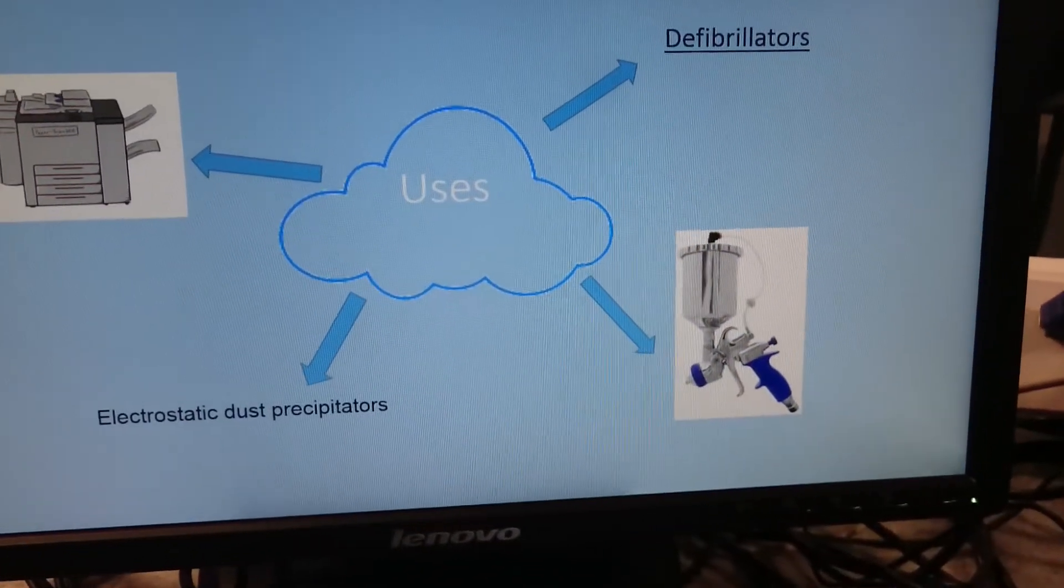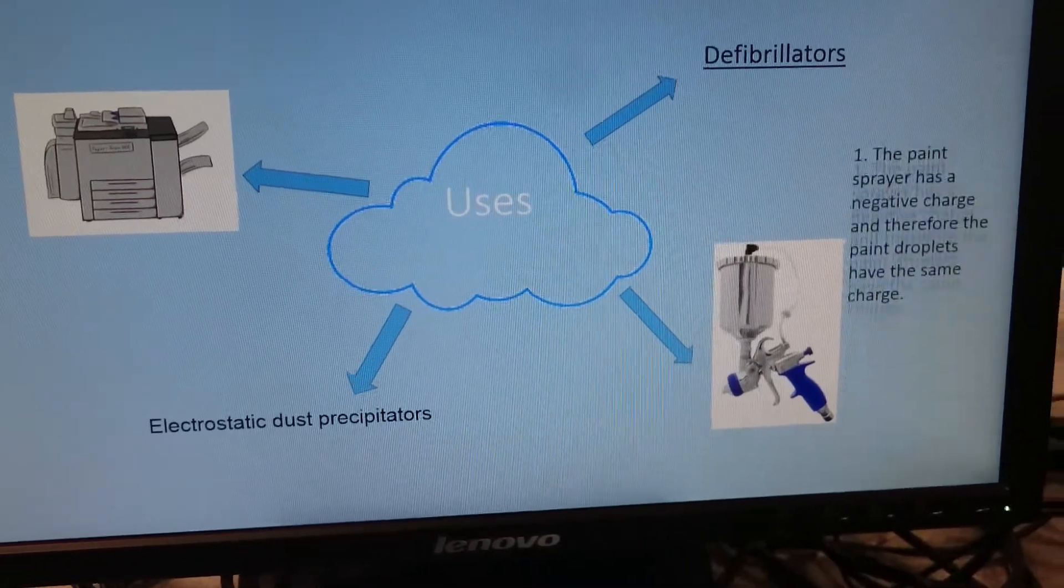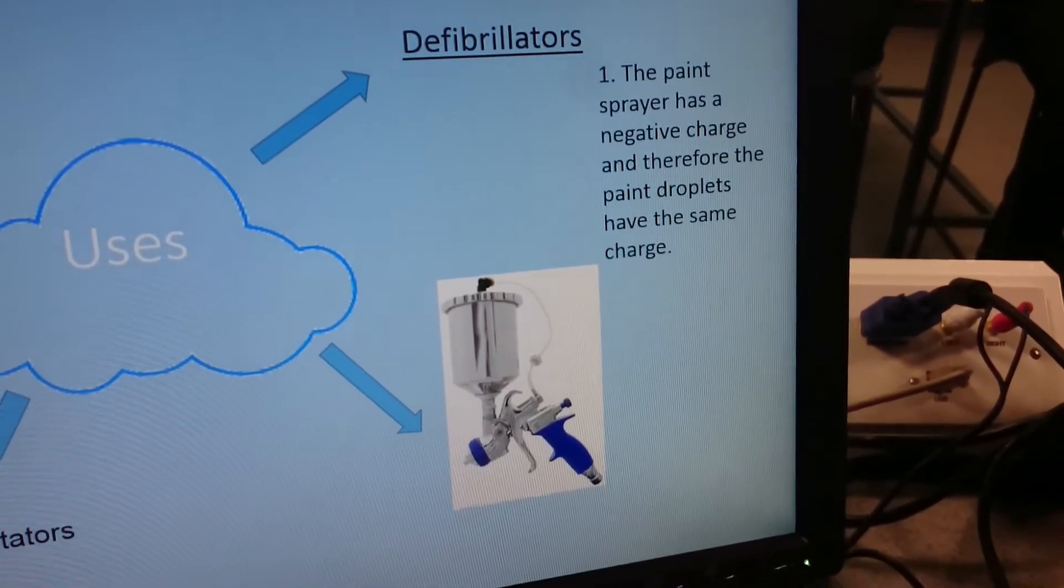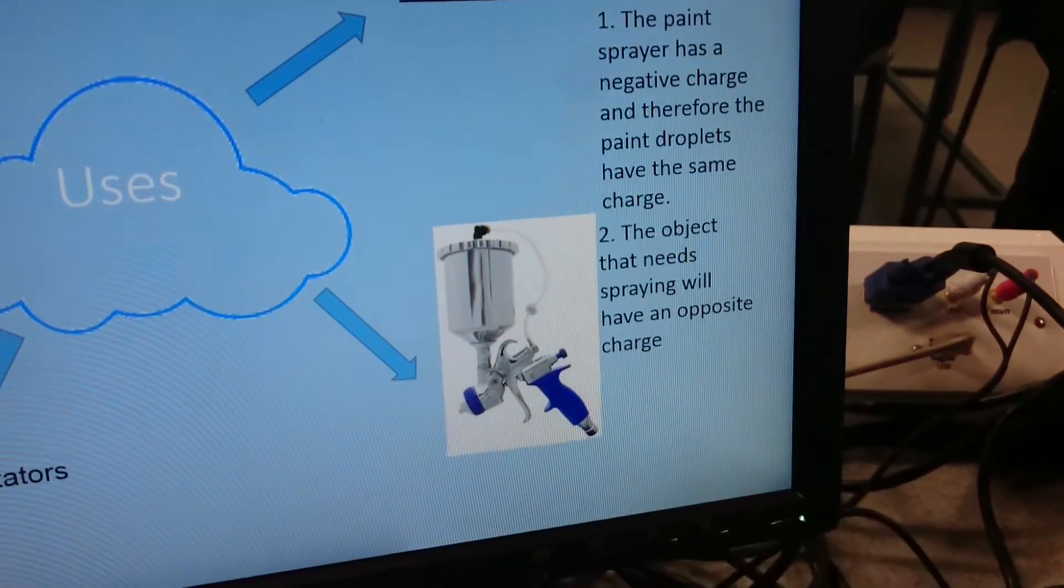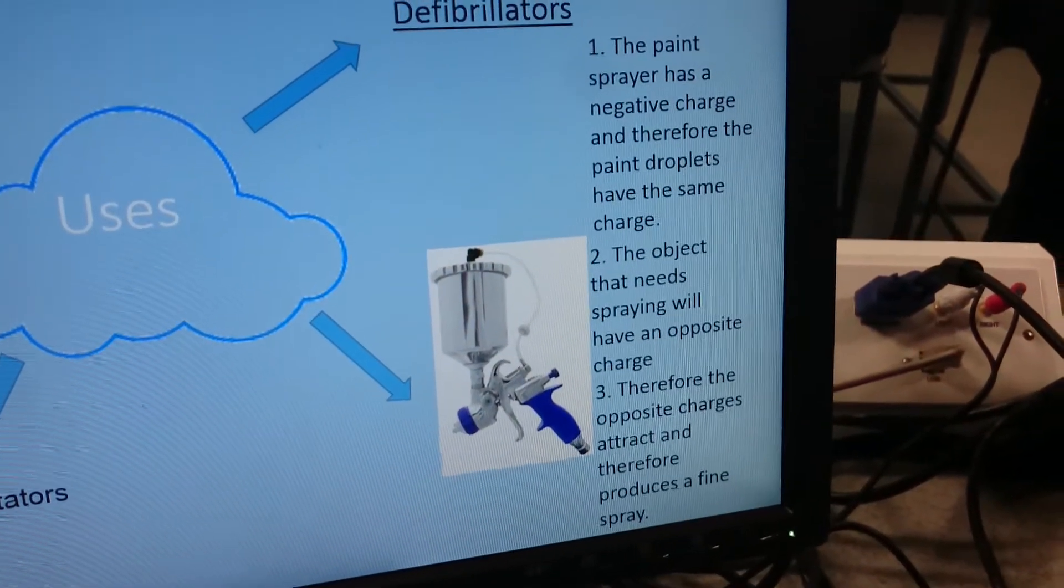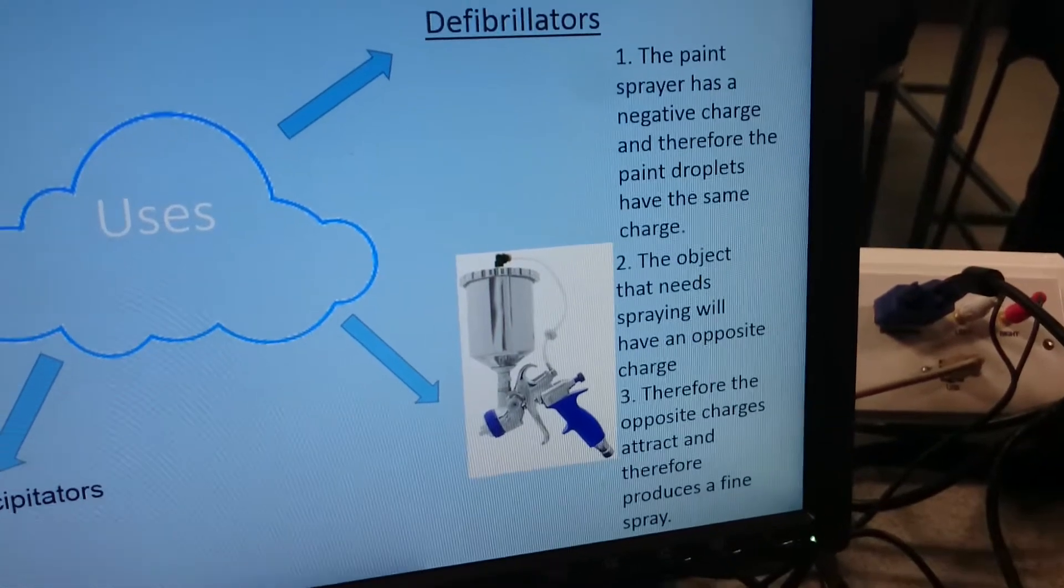Spray paint guns. The paint sprayer has a negative charge, and therefore the paint droplets have the same charge. The object that needs spraying will have an opposite charge. Therefore, the opposite charges attract and produce a fine spray.